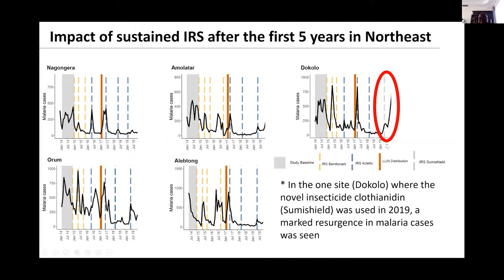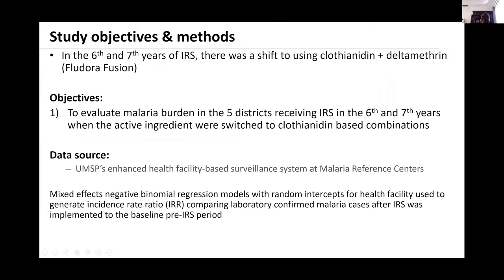In 2019, when we changed from Actellic to SumiShield in this district, we began seeing an increase in cases. All the other districts continued with Actellic except for that district, and we began to see an increase in the number of cases. This created some interesting questions for us. We looked at the impact of IRS in the five districts where there was a shift to clothianidine-based formulations — first SumiShield in Dokoro.